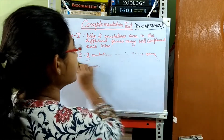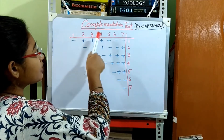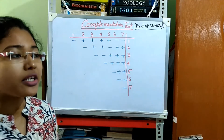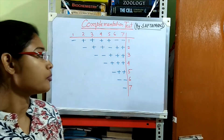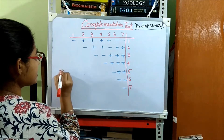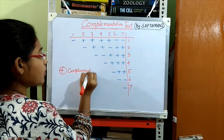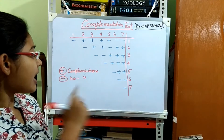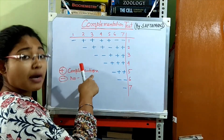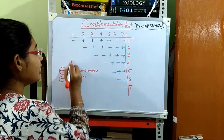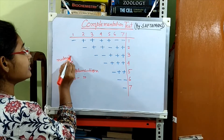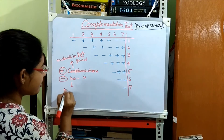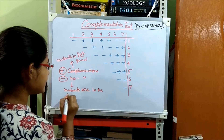Now, coming to an example. Here, mutations 1 through 7 represent independently isolated mutations. We don't know if they are present in the same gene or different genes, but all mutations cause similar phenotype. A positive sign means they are complementing each other, and a negative sign means no complementation. Positive complementation means those mutants are in different genes; no complementation means mutants are in the same gene.